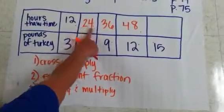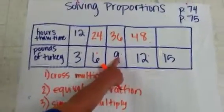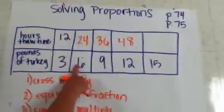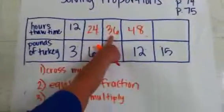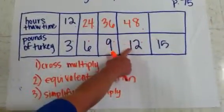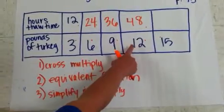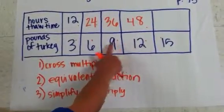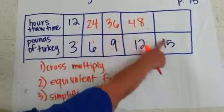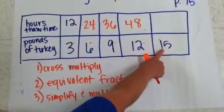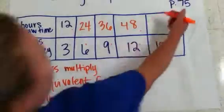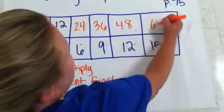Then 24 times 9 is 216, divided by 6 is 36. 36 times 12 is 432, divided by 9 is 48. 48 times 15 is 720, divided by 12 is 60.